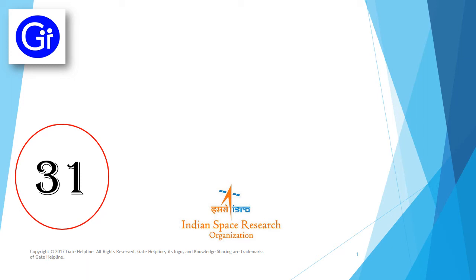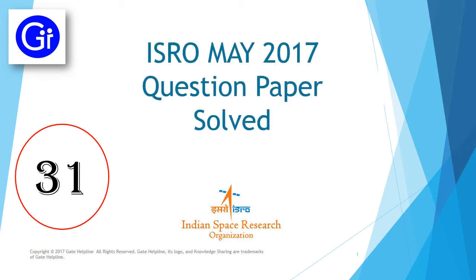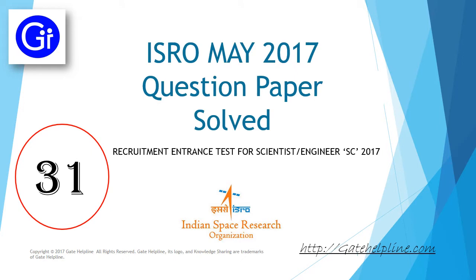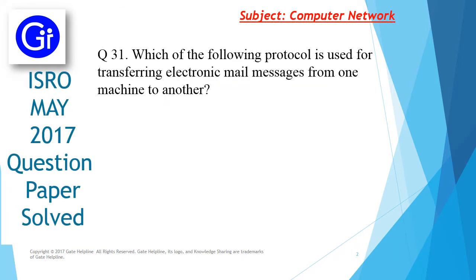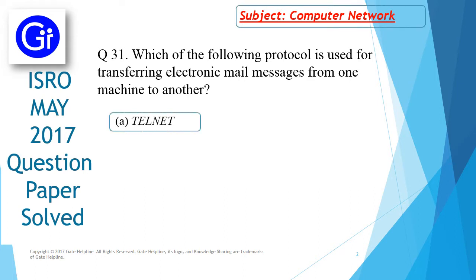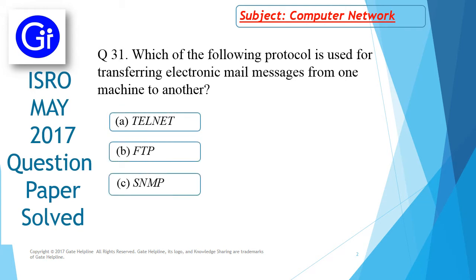Hi friends, today we will see question number 31 from ISRO May 2017 question paper. Question number 31 is: which of the following protocols is used for transferring electronic mail messages from one machine to another? The options are: A) TELNET, B) FTP, C) SNMP, and D) SMTP.